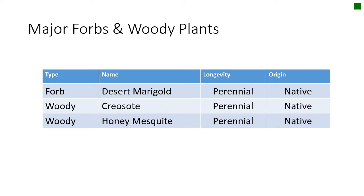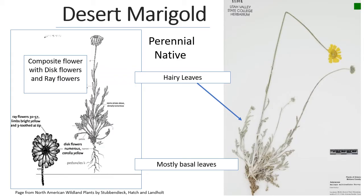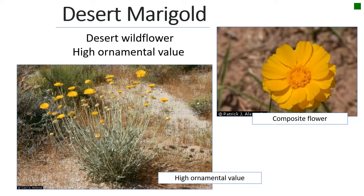Let's move on to a few forbs and woody plants. Let's start with desert marigold, staying down in the southwest. This is a really pretty plant — it has very hairy leaves, mostly basal, that are kind of lobed and dissected. It is a member of the Heliantheae, the sunflower tribe, and its flower is a composite with yellow ray flowers like the rays of the sun and yellow disc flowers in the center. Because of those beautiful yellow flowers it's used a lot in ornamental landscaping in the southwest, paired with lobed, hairy, gray leaves.